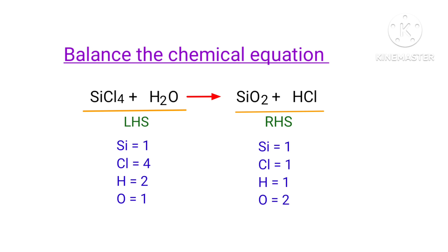The number of atoms are not balanced on both sides. To balance the chemical equation, we need to make use of coefficients. A coefficient is a number that we place in front of a chemical formula.